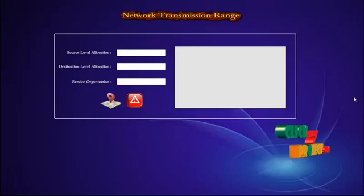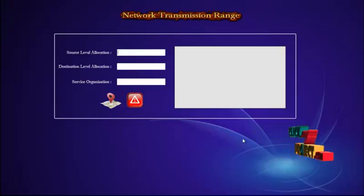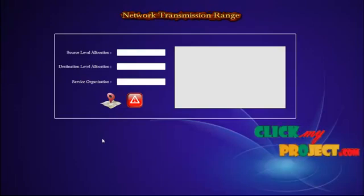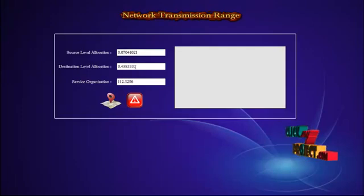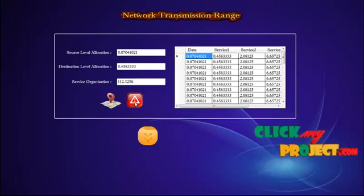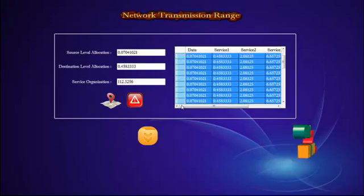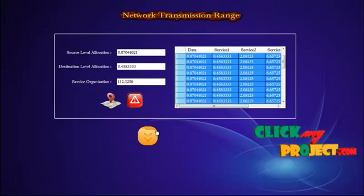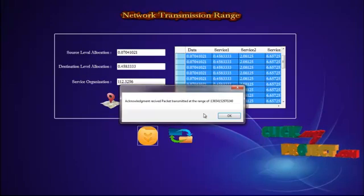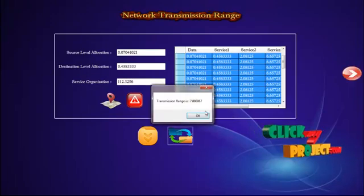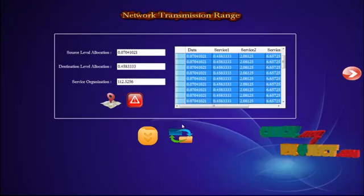Let's see the next process — we are going to find the network transmission range. We have seen the network coverage, source, and destination. Now data may get transmitted from one node to another. We need to calculate the distance of each node and edges, with source level location and destination. The service area allocation from source to destination is provided. Before transmitting a node, we need to get an acknowledgement. The acknowledgement received and packet transmitted at that range — our acknowledgement is successful. The transmission range is 7.886867, and the network is transmitting nodes successfully.